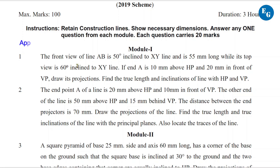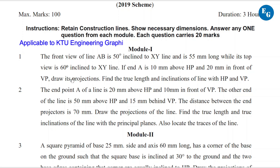The front view of line AB is 50 degrees inclined to XY line and is 55 mm long, while its top view is 60 degrees inclined to XY line. If end A is 10 mm above HP and 20 mm in front of VP, draw its projection, find the true length and inclination of the line with HP and VP.